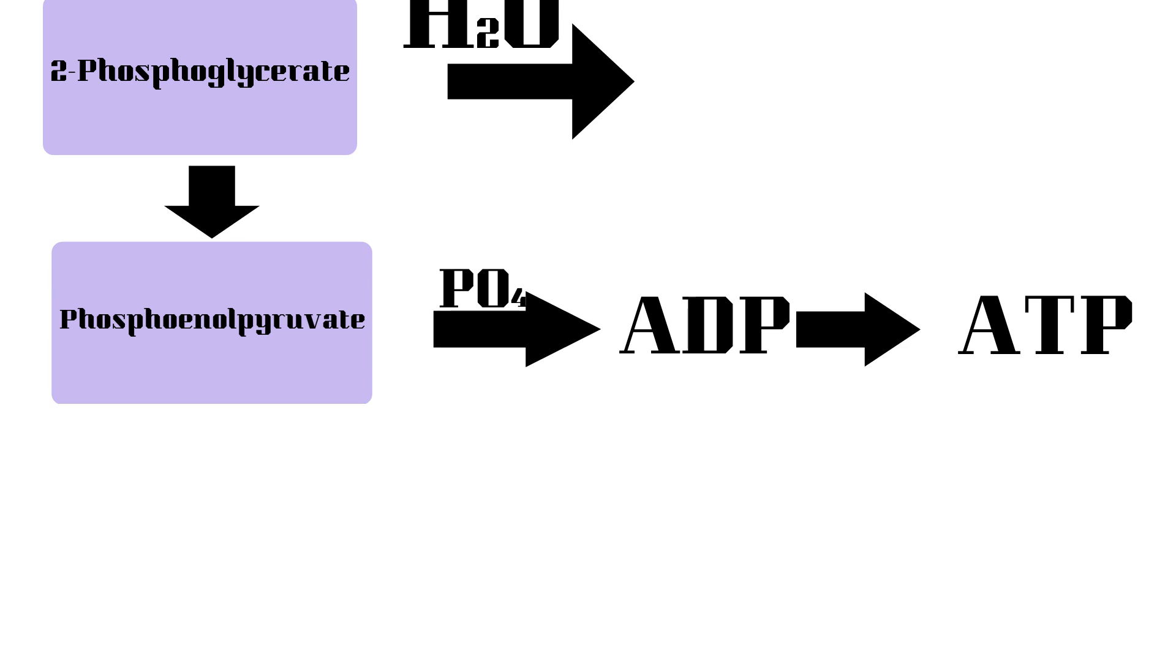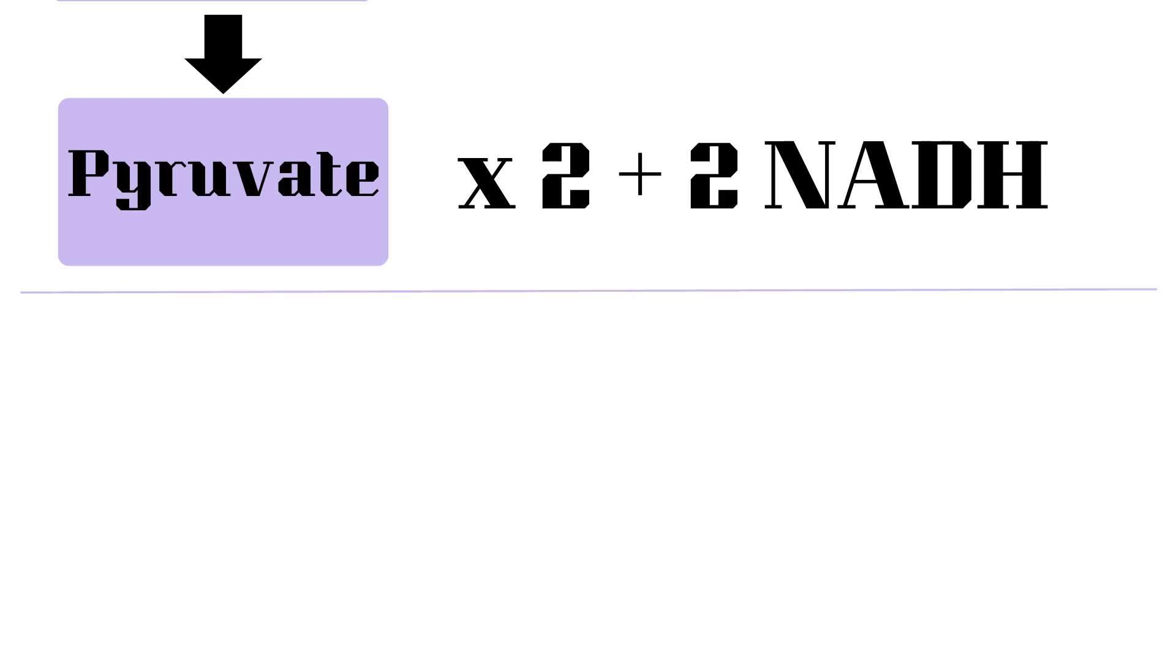The loss of a phosphate group from phosphoenolpyruvate results in a pyruvate molecule. This is the last step of glycolysis, which results in two pyruvate molecules.